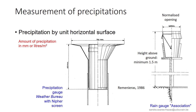Welcome to this second lesson. We will discuss measurement of precipitation. Precipitations are measured in liters per square meter on horizontal surfaces. One liter of water over a horizontal surface of one square meter yields a layer of one millimeter. This is why a common unit for measuring rainfall volume is in millimeter.